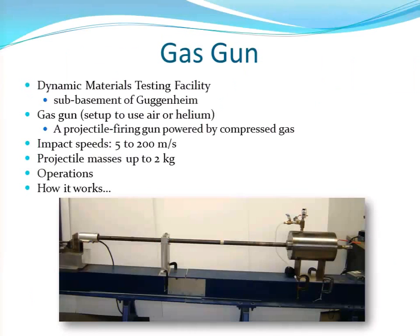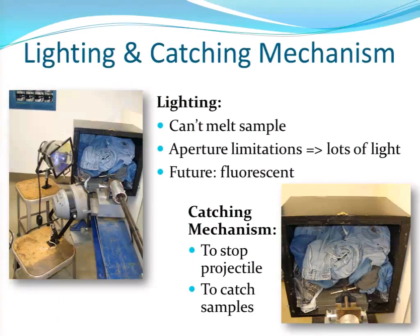Here are the specs on the gas gun — it's pretty simple. You can use helium or air — we just used air. It can go up to 200 meters per second, though we didn't quite go that high, which was a limitation of our camera. The projectile was a two-kilogram metal projectile.